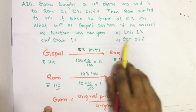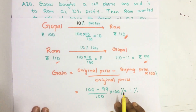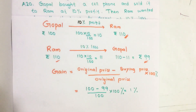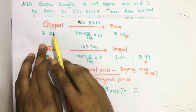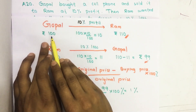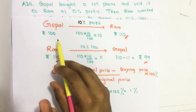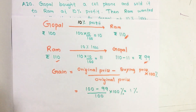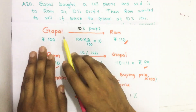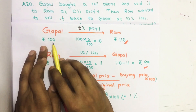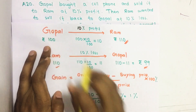We have four options here. For doing this problem, I simply took an example where the cell phone price is Rs. 100. I chose 100 because the calculation will be easy. Gawbal bought this phone from some wholesaler for Rs. 100.